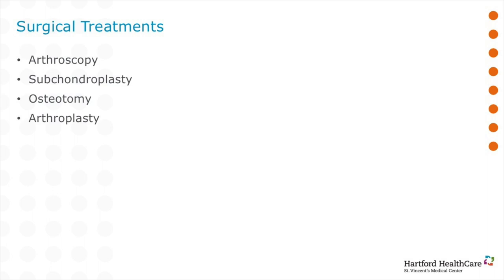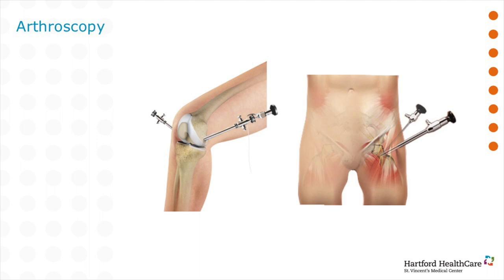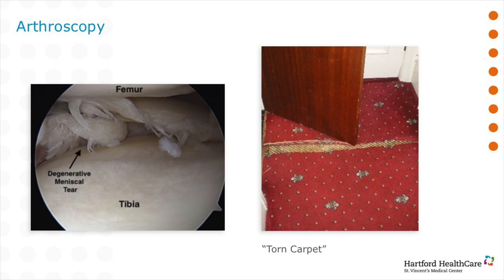Moving on to surgical treatments. When conservative measures fail, there are several surgical options including arthroscopy, subchondroplasty, osteotomy, or arthroplasty. Arthroscopy is a minimally invasive approach allowing surgeons to access the joint. While the role of hip arthroscopy is very limited in hip arthritis, it may be of some benefit in patients with abnormal anatomy causing labral tears or early degenerative changes. Knee arthroscopy, on the other hand, can be helpful in osteoarthritis when mechanical symptoms are present.